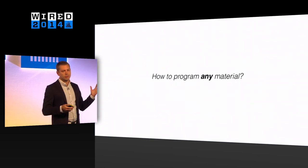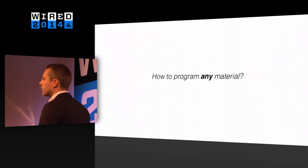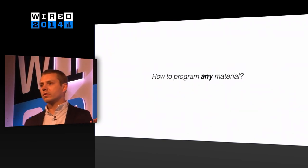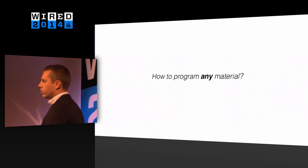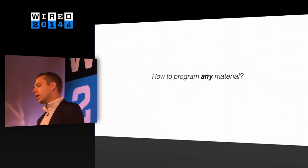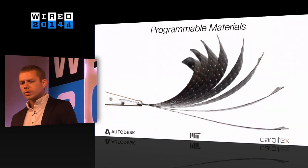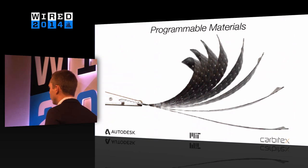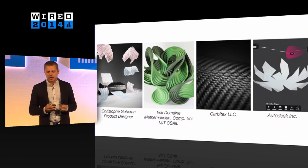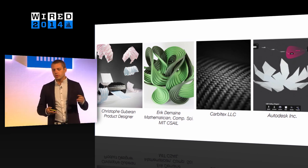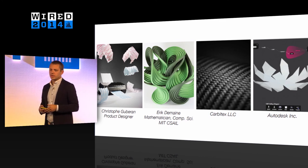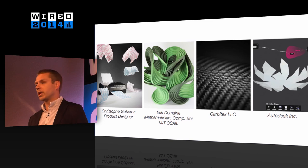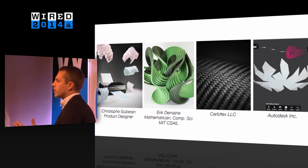After we introduced this, many different companies came to us asking whether we could do it with different materials or different energy sources — they wanted carbon fiber, not just plastics. The question became: how could we program every material? So what I'm going to show now is some of our most recent work — we're calling this suite 'programmable materials.' It's a collaboration with product designer Christoph Guberan, mathematician and computer scientist and origami master Eric Demaine looking at folding algorithms, Carbitex who makes flexible carbon fiber, and Autodesk rethinking software for programmable matter.